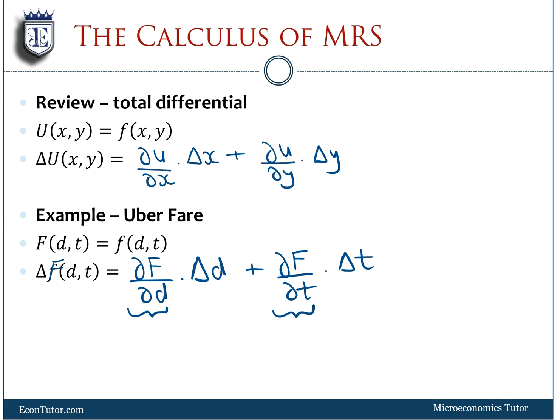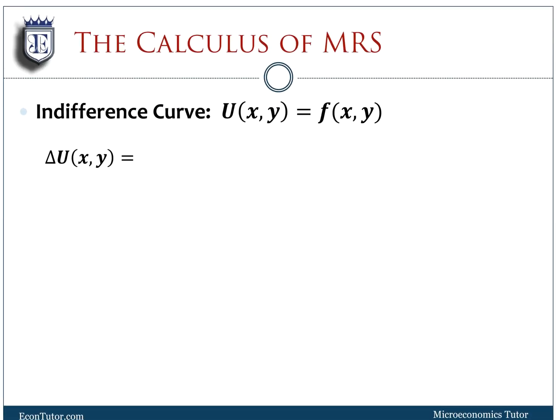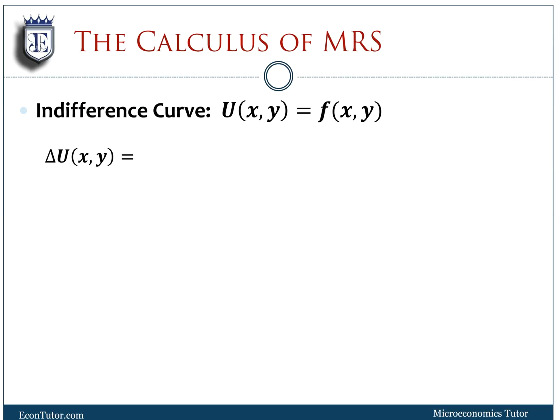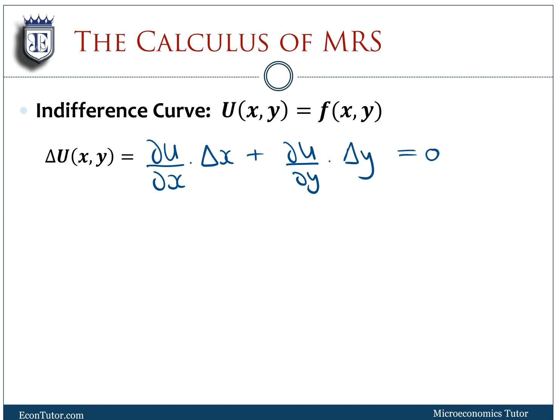Now let's apply this to the indifference curve. The total differential is given by the partial of utility with respect to X times ΔX, plus the partial of utility with respect to Y times ΔY. On an indifference curve, the change in utility should be zero, because if you're indifferent, by definition the change in utility is zero.